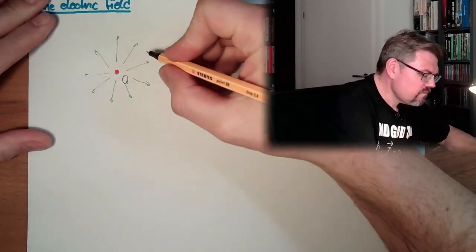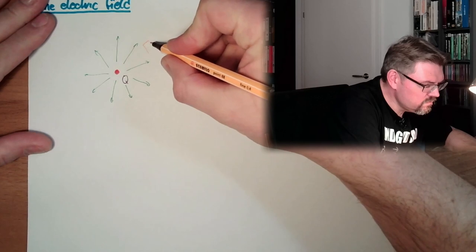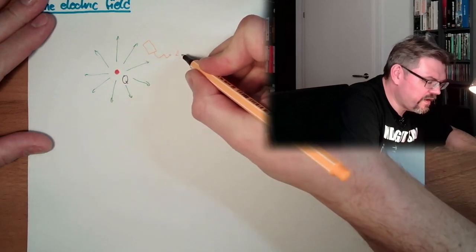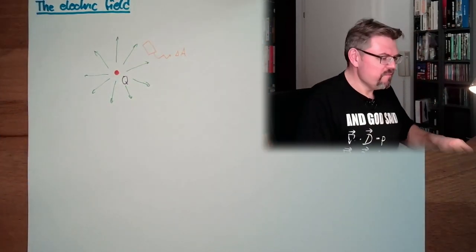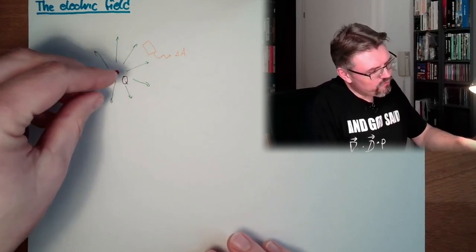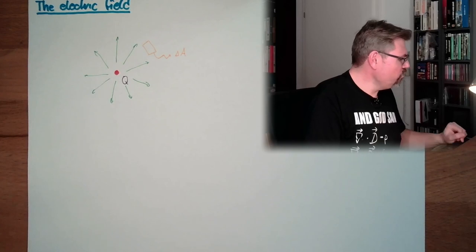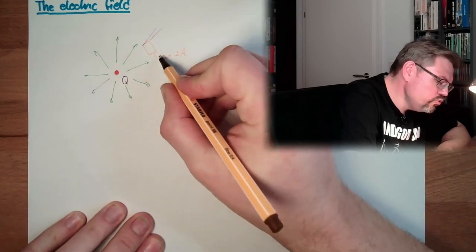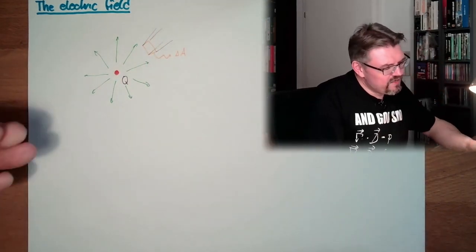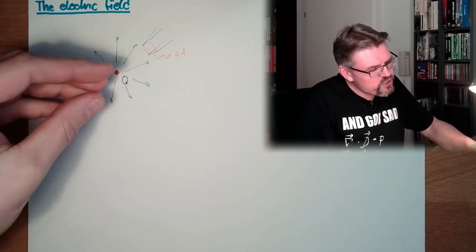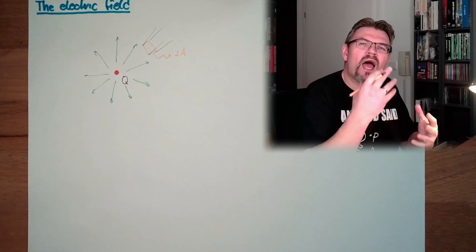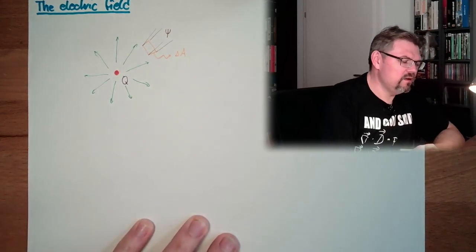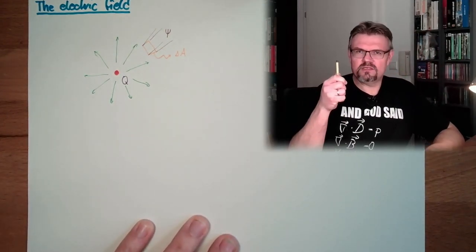So let's say we have somewhere here a window, or a small area, call it delta A, small area. Then a part of this flow, of this Q flow, is also passing through here. So we have here the flow from here, originated from the Q, is somehow also shining through this window. And this flow is assigned this sign. So it's a trident to rule the seven seas, you need the electric flux.